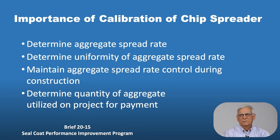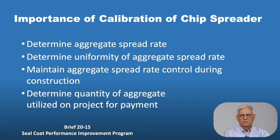The importance of calibrating a chip spreader has to do with making sure we get the aggregate spread rate as designated by the engineer. We need to determine the uniformity of this spread rate, maintain that aggregate spread rate during the entire construction process, and determine quantities of aggregates that are going to be utilized for payments on these projects. So all of this is important from a calibration point of view.